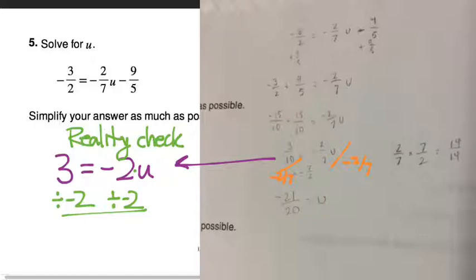And when it comes time to actually compute that quotient, we would have had to keep change, flip anyway. And so we ended up here with 3 tenths times negative 7 over 2. And how do you multiply two fractions? Straight across the numerator, straight across the denominator. And so this person's solution is u equals negative 21 over 20. And I agree that that is the solution to this equation.